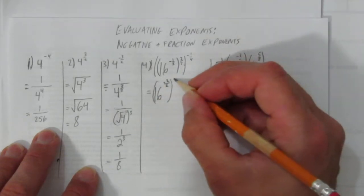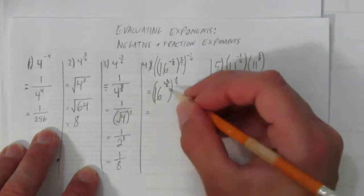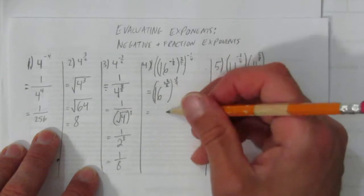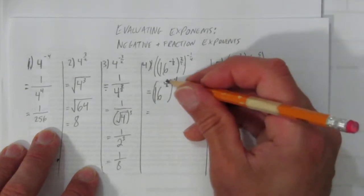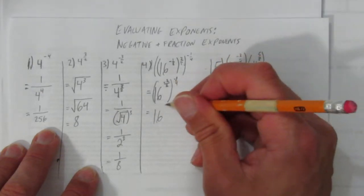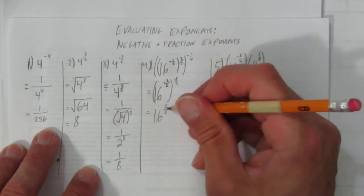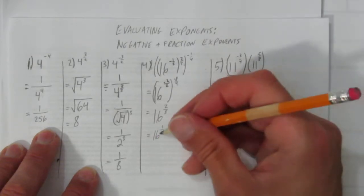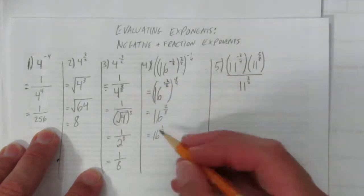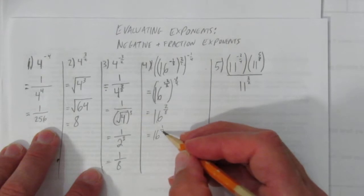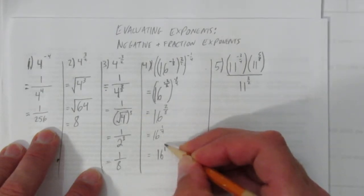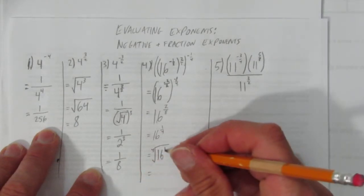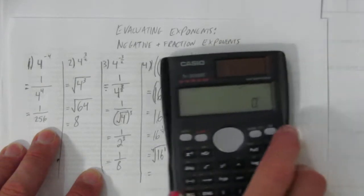All to the power of negative one-quarter. I'll simplify first: 16 to the negative 2 over 2. I've got exponent on exponent again — power of a power — so top times top is 2, bottom times bottom is 8, giving 16 to the 2 eighths. Simplifying, 2 eighths equals one quarter, so I have 16 to the one-quarter. The fractional exponent means top is power, bottom is root: the fourth root of 16 to the power of 1.